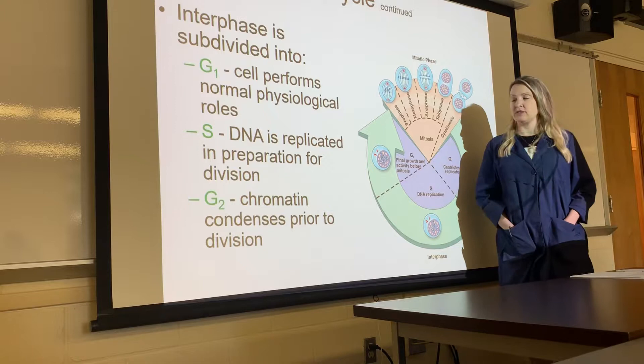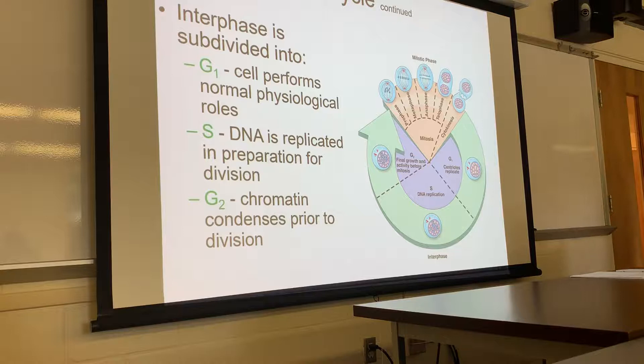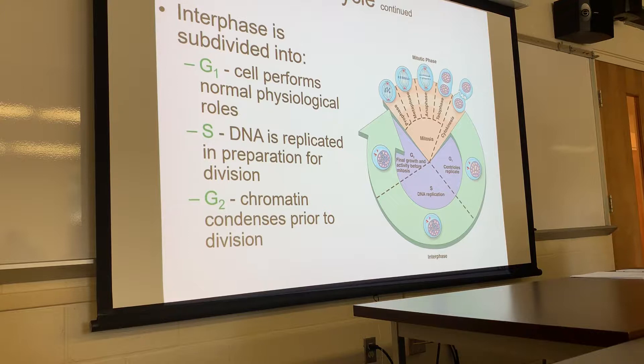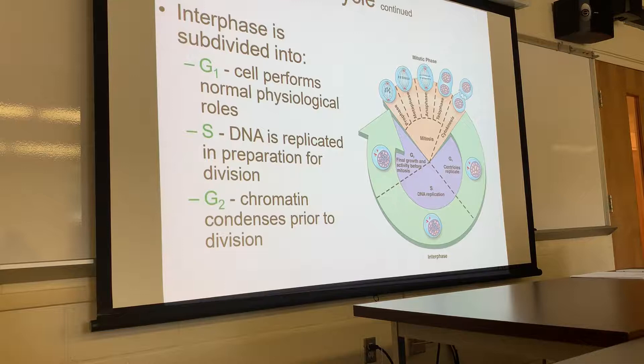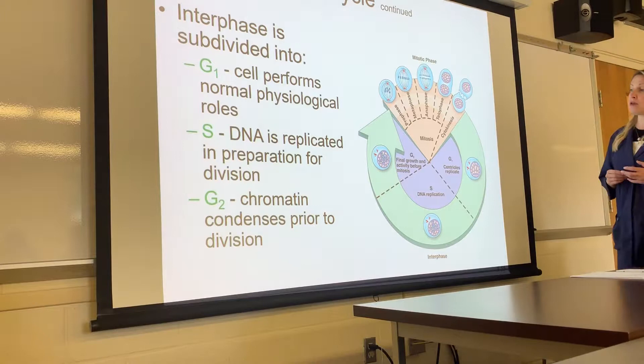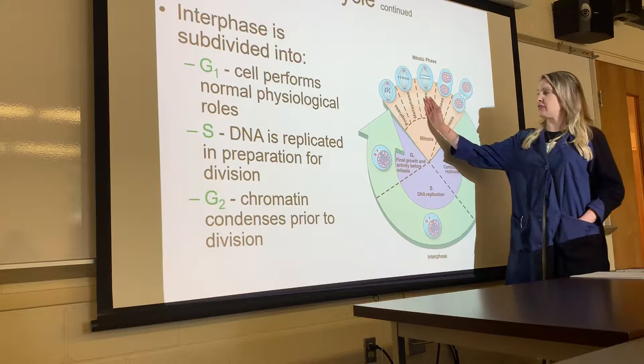G2 is like getting ready for a picnic and packing everything you need. In G2 you're making more ribosomes, more organelles — everything necessary so that when the cell divides, the new cell will have enough of everything it needs. After G2, we enter the mitosis phase. Mitosis is actually pretty fast compared to interphase.